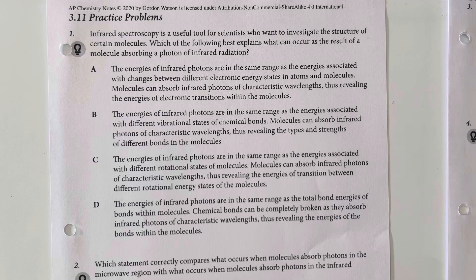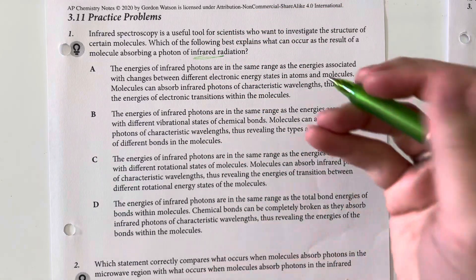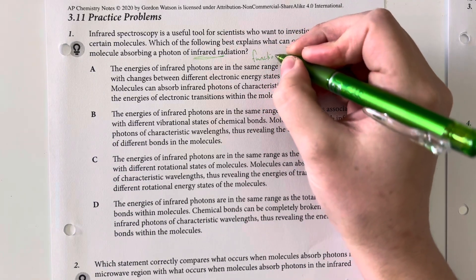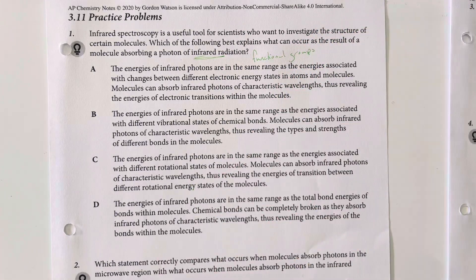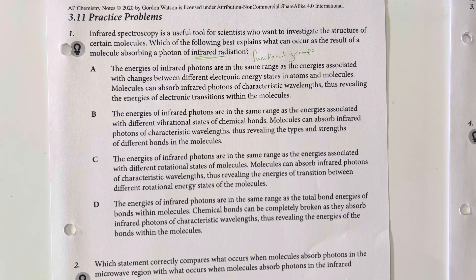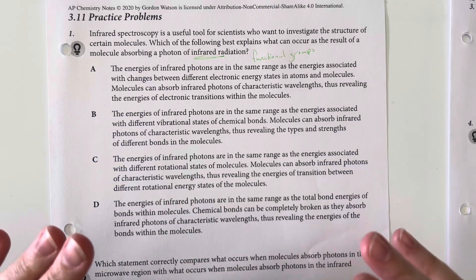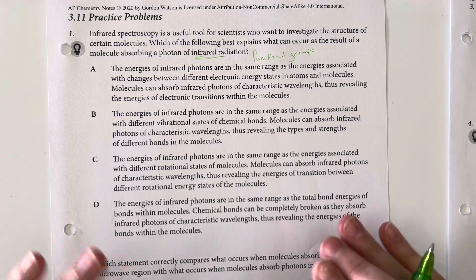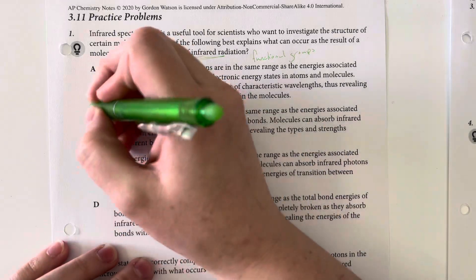So, for infrared, we are specifically going to be finding the functional groups, which means that we are going to be determining what kind of bonds we are dealing with and the strengths and types of those bonds. So that is going to be option B.